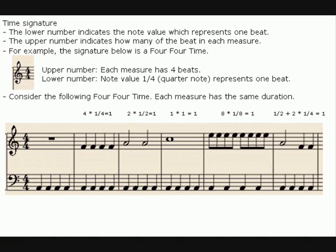Time Signature. The lower number indicates the note value which represents 1 beat. The upper number indicates how many of that beat value appear in each measure.